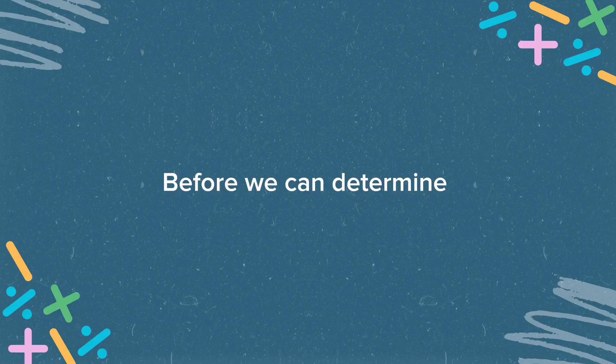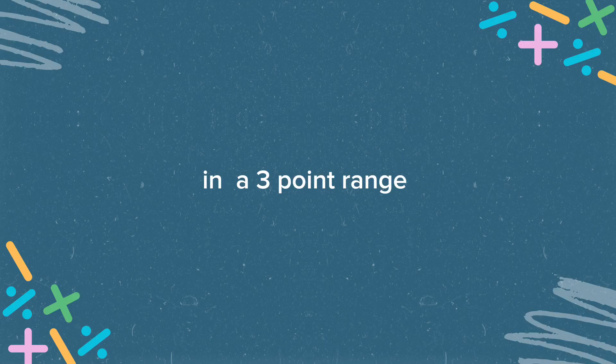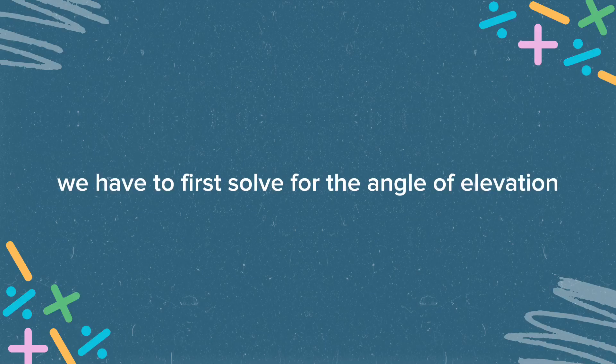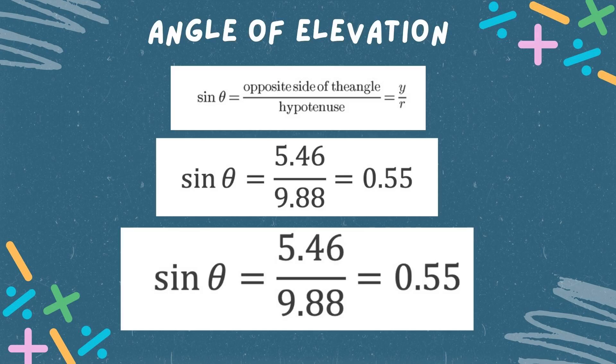Before we can determine the best position to shoot a ball in a three-point range, we have to first solve for the angle of elevation. Using the formula: sine is equal to the opposite of the angle, which is our vertical velocity, over the hypotenuse, which is our diagonal velocity. Now let us substitute the given and solve, which will give us 33.37 degrees. Therefore, the best angle for us to make a three-point shot with a height of 1.52 meters and a distance of 6.7 meters, we must throw the ball at a velocity of 9.88 meters per second at 33.37 degrees.